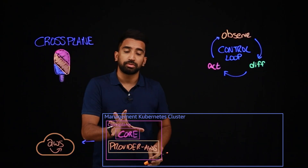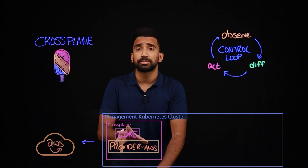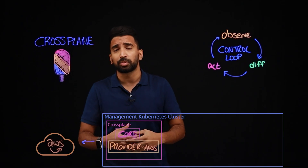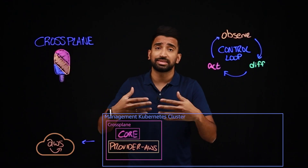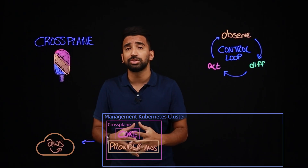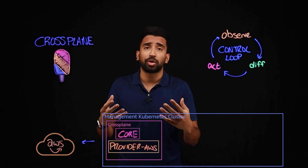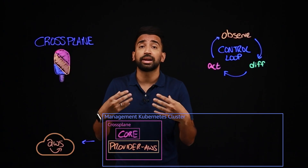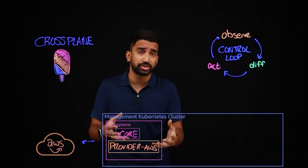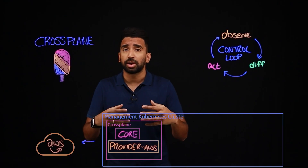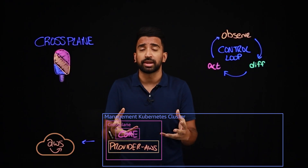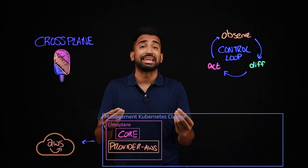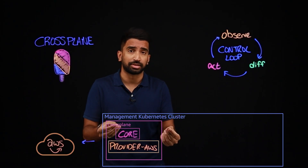Now, we're going to need to set up some credentials here, whether it's a Kubernetes secret with the AWS credentials, or even IRSA — IAM roles for service accounts — when you're running Crossplane on an Amazon EKS cluster.